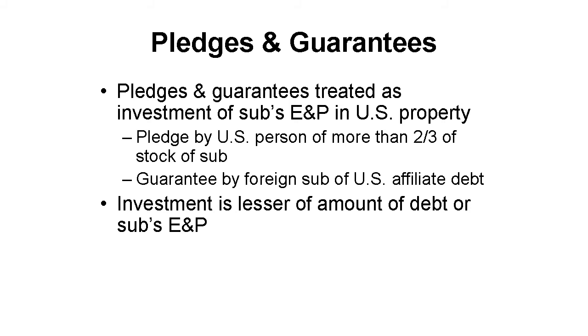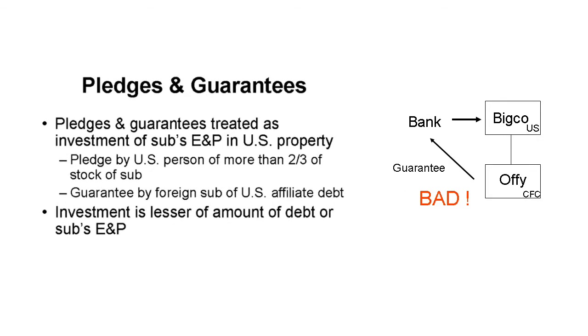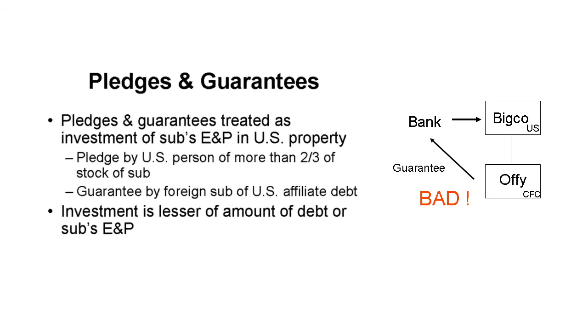Okay, you say, I know how to get around this rule — I'll just go to my bank and borrow the money. Then I'll have my CFC do an offsetting deposit and guarantee the loan to me, or I'll pledge the shares to the bank in support of the loan. Well, Congress already thought of this over 40 years ago. A pledge of CFC shares by a U.S. shareholder or a guarantee of related U.S. person debt by a CFC is itself considered an investment in U.S. property. The investment is the total amount of the loan that is the object of the pledge or guarantee.